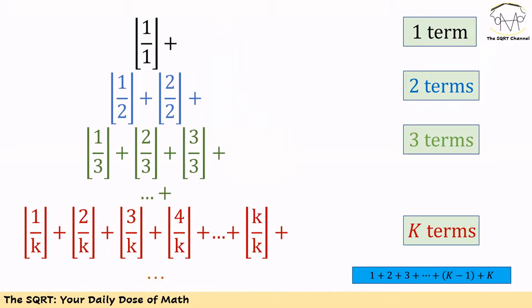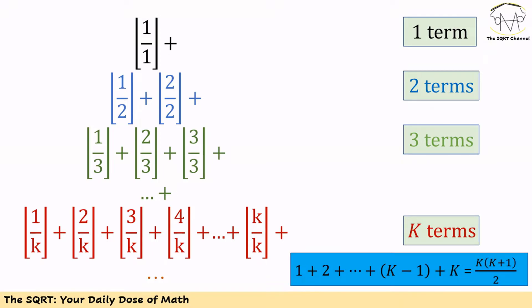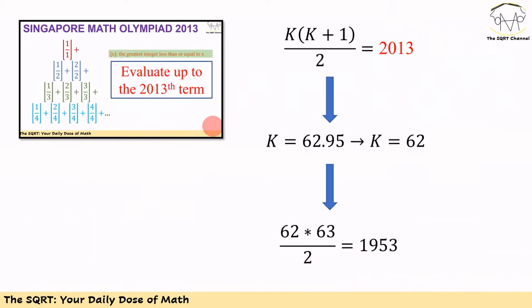Based on that, we can count the total number of terms. If we start with floor of 1 over 1 and end with floor of K over K, the total is 1 plus 2 plus 3 up to K, which equals K times (K plus 1) over 2. This is the total number of terms when we start from floor of 1 over 1 and end with floor of K over K.